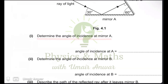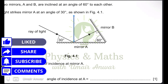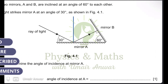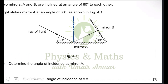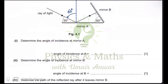The angle of incidence is measured using a normal, which is a line perpendicular to the surface at which the light is striking. This is the normal, drawn as a dotted line. We measure the angle from the normal to the incident ray. Since the total angle is 90 degrees, the angle here is 90 minus 30, equal to 60 degrees. So the angle of incidence at mirror A is 60 degrees.